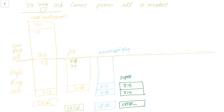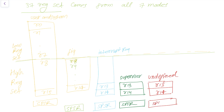Similarly, supervisor mode has its own different R13 and R14 plus SPSR. Undefined mode also has different R13 and R14 compared to other modes, plus SPSR. Abort mode likewise has its own R13 and R14, plus SPSR.